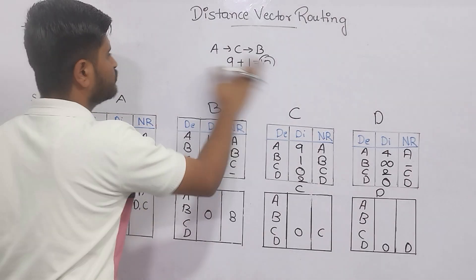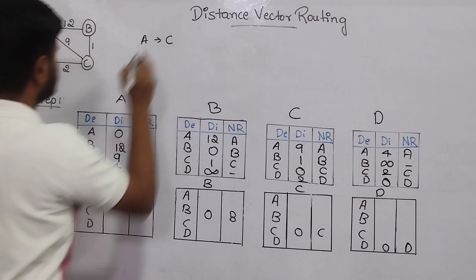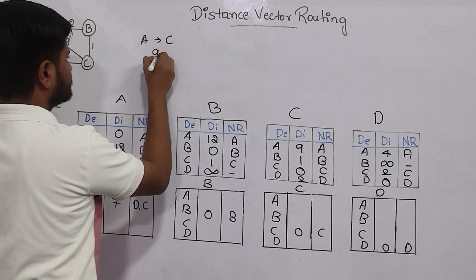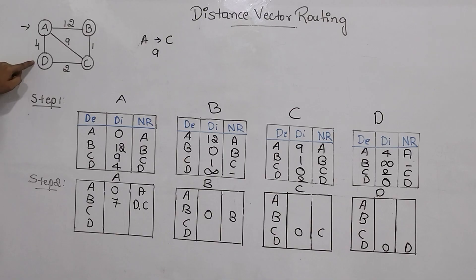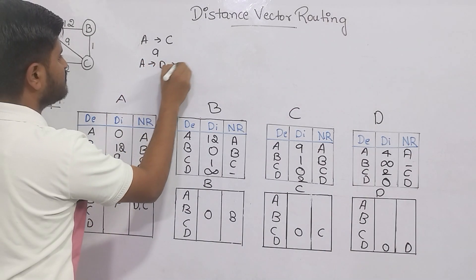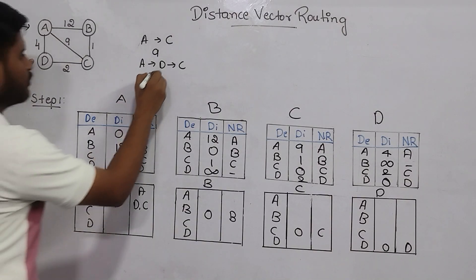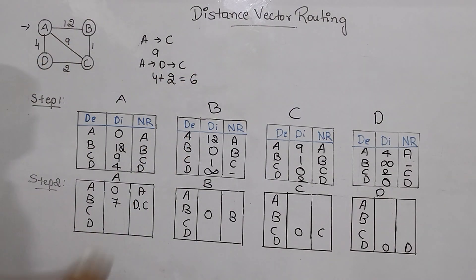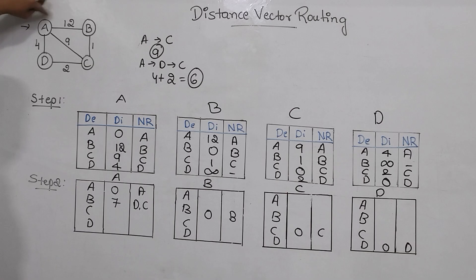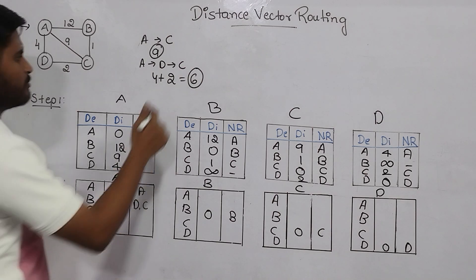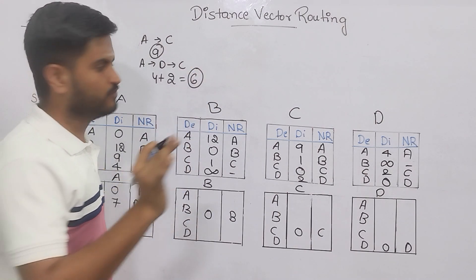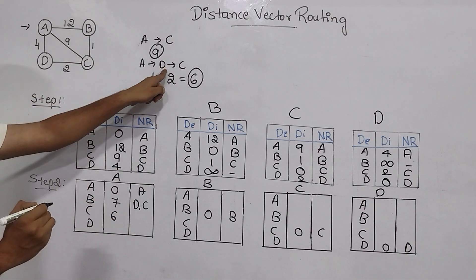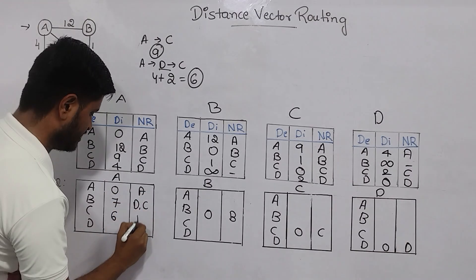From A, I must move to C. One possible path is direct: distance 9. Another: A→D→C gives 4 + 2 = 6. Another: A→B→C gives 12 + 1 = 13. Among 13, 9, and 6, the smallest value is 6. So I write 6 here. And I used router D to move from A to C, so I write D as the next router.